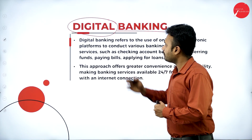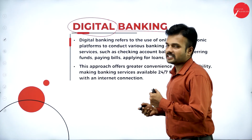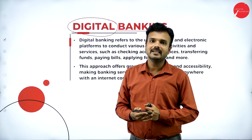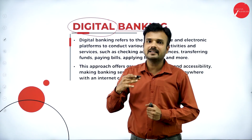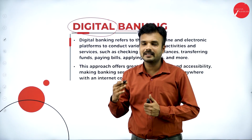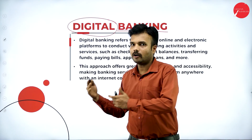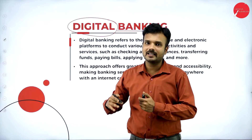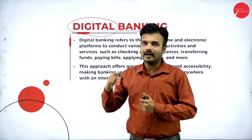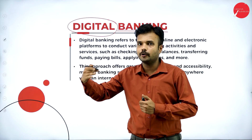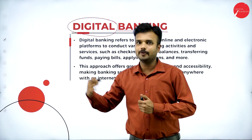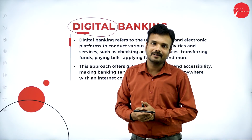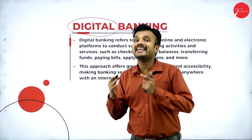The best example for digital banking is that we carry a cell phone everywhere. We consider modes of payment like PhonePe or Google Pay. If I purchase anything, instead of carrying physical cash, I make payment through PhonePe or Google Pay. That is the best example for digital banking — it is like e-currency.